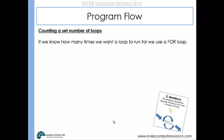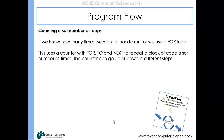If we know how many times we want a loop to run, we can use a for loop. This uses a counter which repeatedly executes a block of instructions for a set number of times. The counter can go up or down in different steps, and when it reaches the end value, the loop finishes.